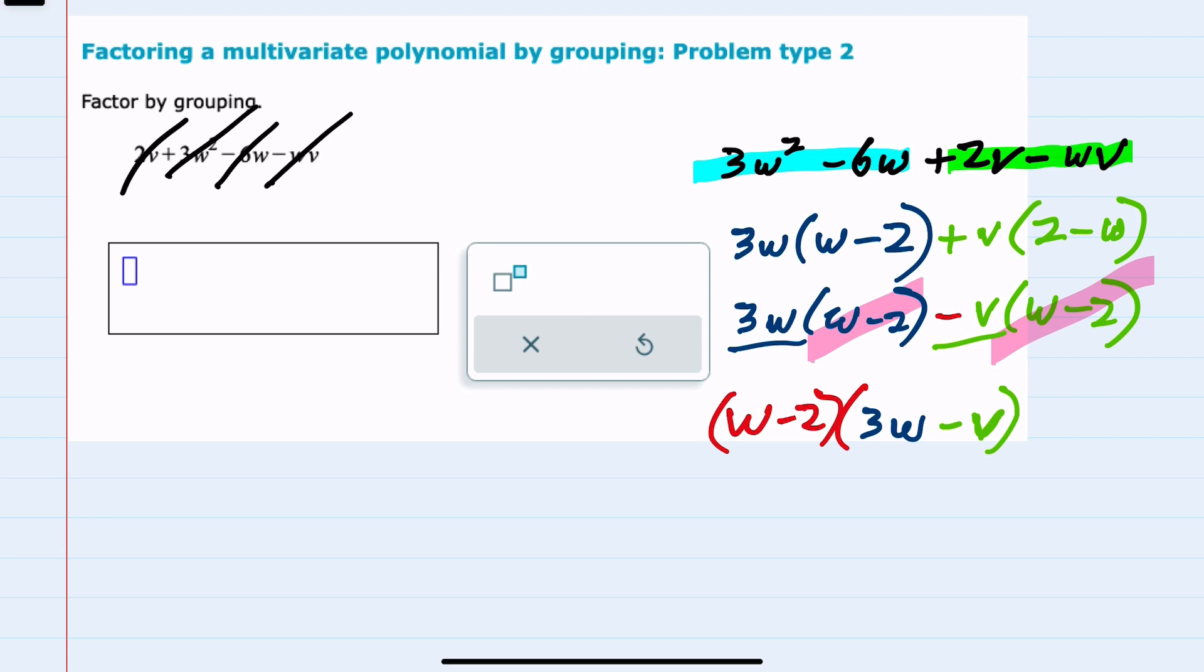And from here, I can see that I've fully factored using grouping once I rearranged the terms so that I could factor each pair.